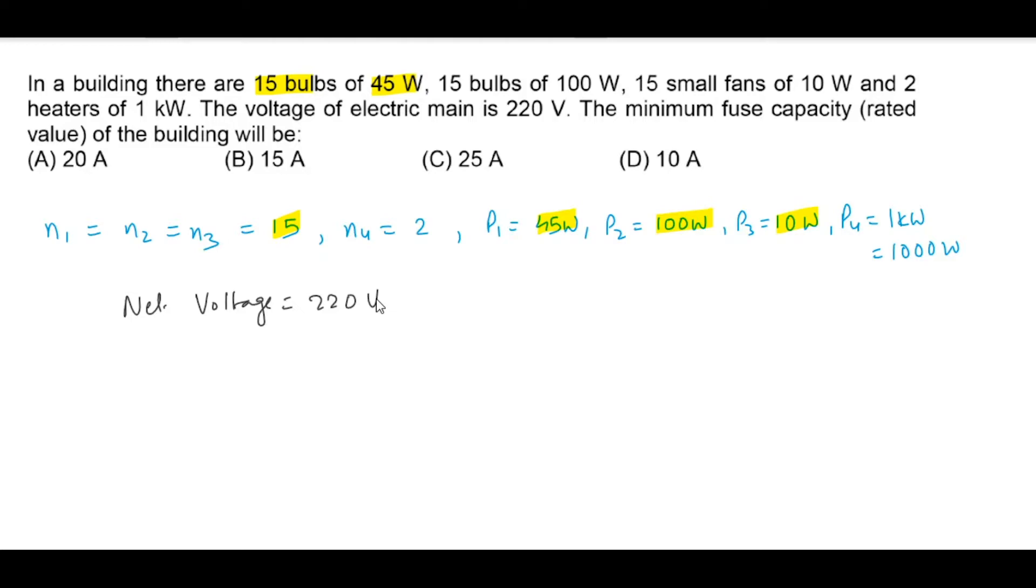So here the total power consumed, that would be P equals 15 into 45 plus 15 into 100 plus 15 into 10 plus 2 into 1000. This equals 4325 Watts, so this is the total power required in Watts for the whole building.